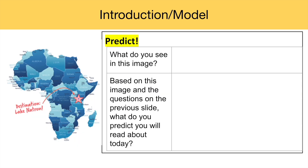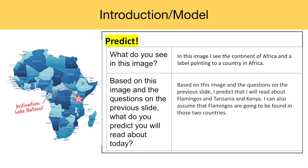Predict: What do you see in this image? On the left, I see the continent of Africa and a label pointing to a country in Africa. Based on this image and the questions on the previous slide, what do you predict you will read about today? I predict that I will read about flamingos and Tanzania and Kenya. I can also assume that flamingos are going to be found in those two countries.